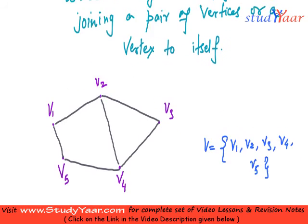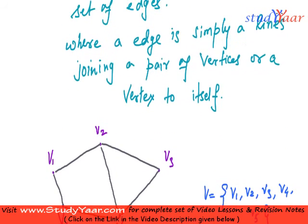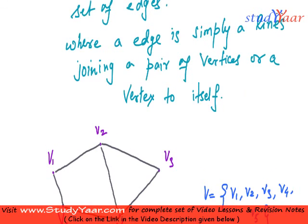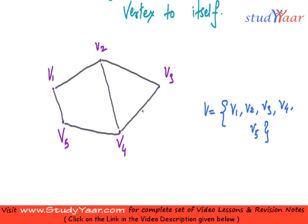We have defined graph where an edge is line joining a pair of vertices or a vertex to itself. So we can also have an edge like this. Here what I have done is I have drawn a line where V3 is connecting V3 itself.